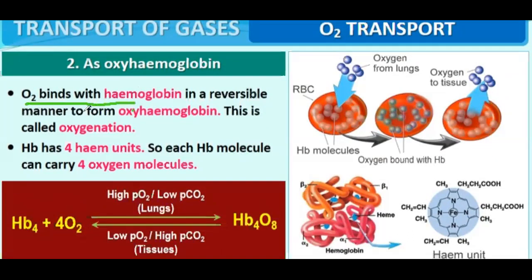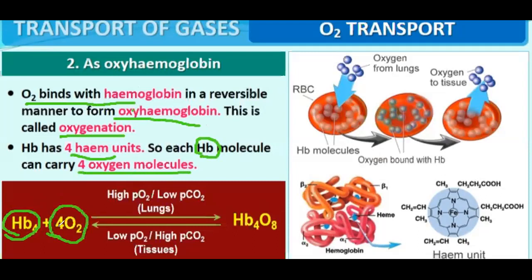Oxygen binds with hemoglobin in a reversible manner to form oxyhemoglobin — this process is called oxygenation. Hemoglobin has 4 heme units, and each hemoglobin molecule can carry 4 oxygen molecules, since each heme unit can carry one oxygen molecule. So one hemoglobin molecule can carry 4 oxygen molecules total.